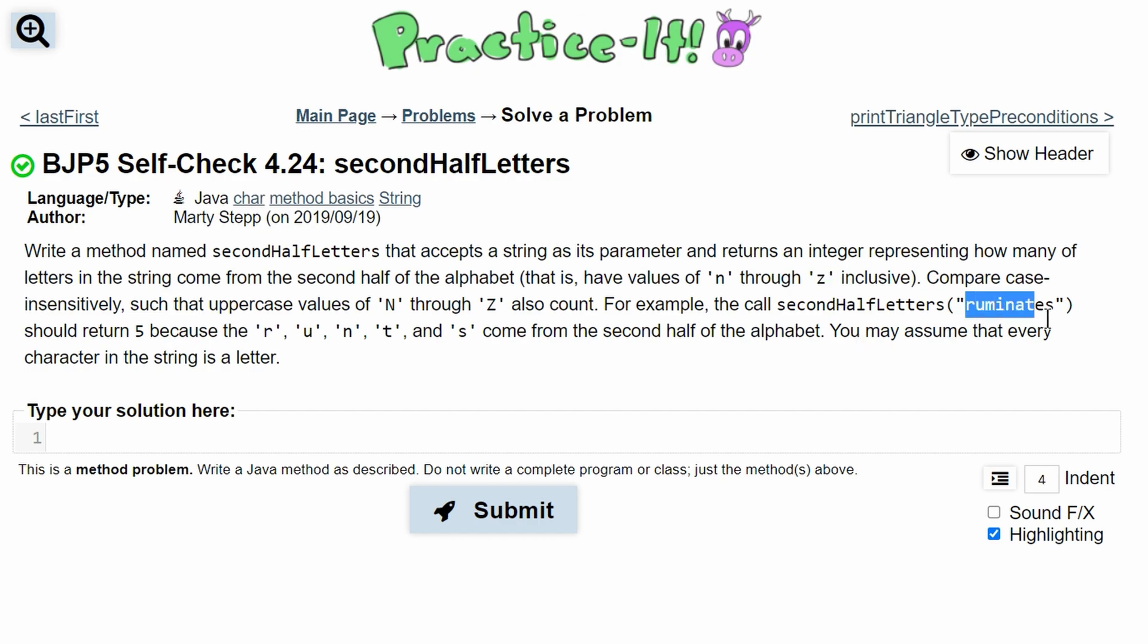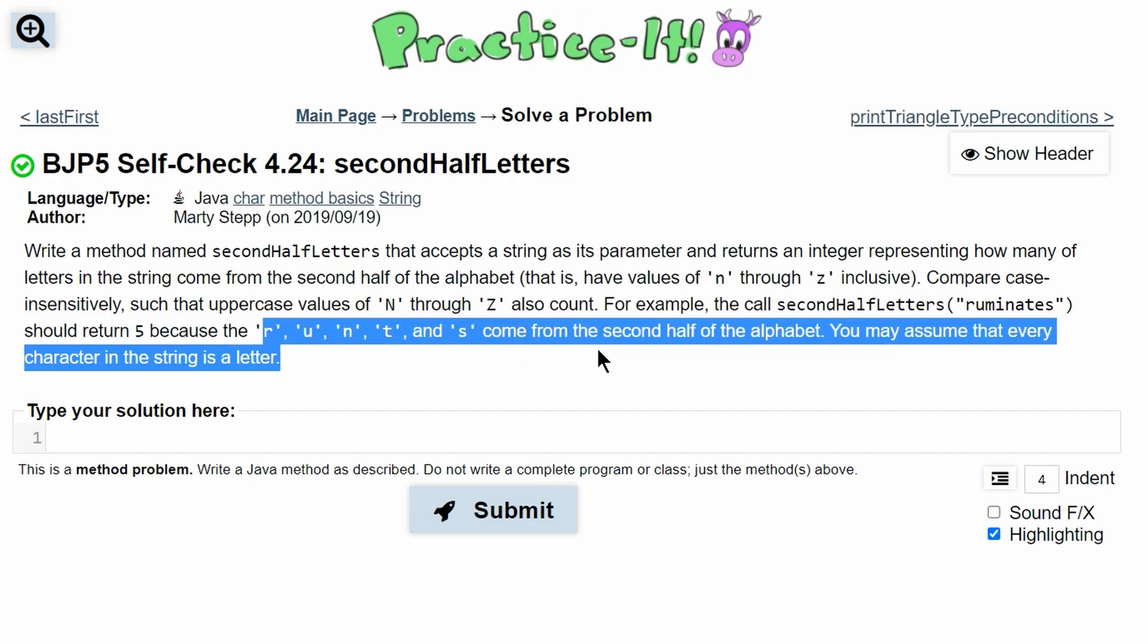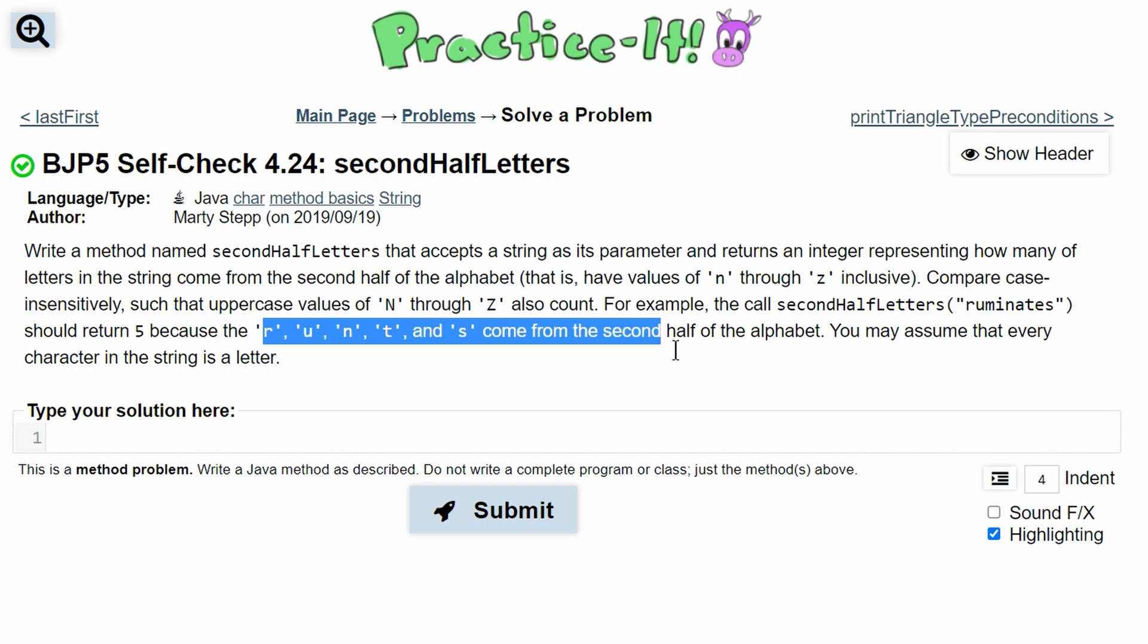So basically, if we get a string like this, we are going to return 5 because r, u, n, t, and s come from the second half of the alphabet.